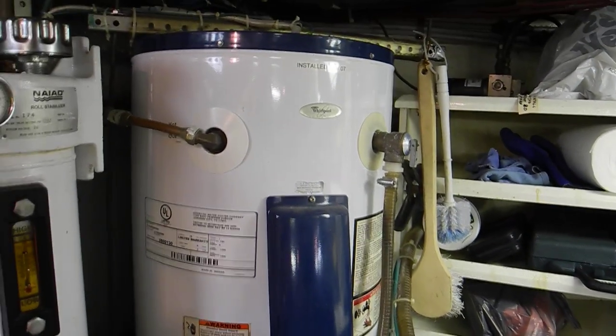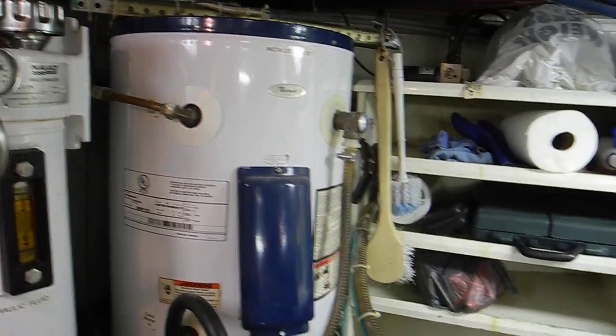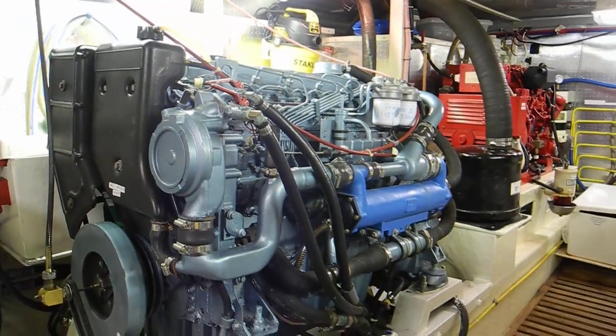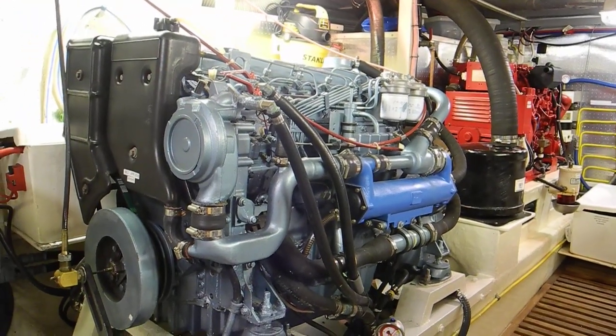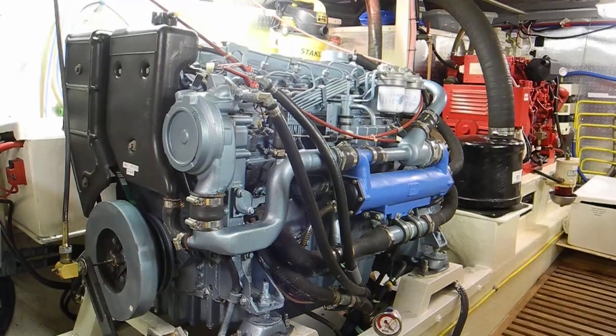While I'm over here, you can see we've got this large electric water heater and then the Perkins diesel engines—six cylinders, 130 to 135 horsepower.